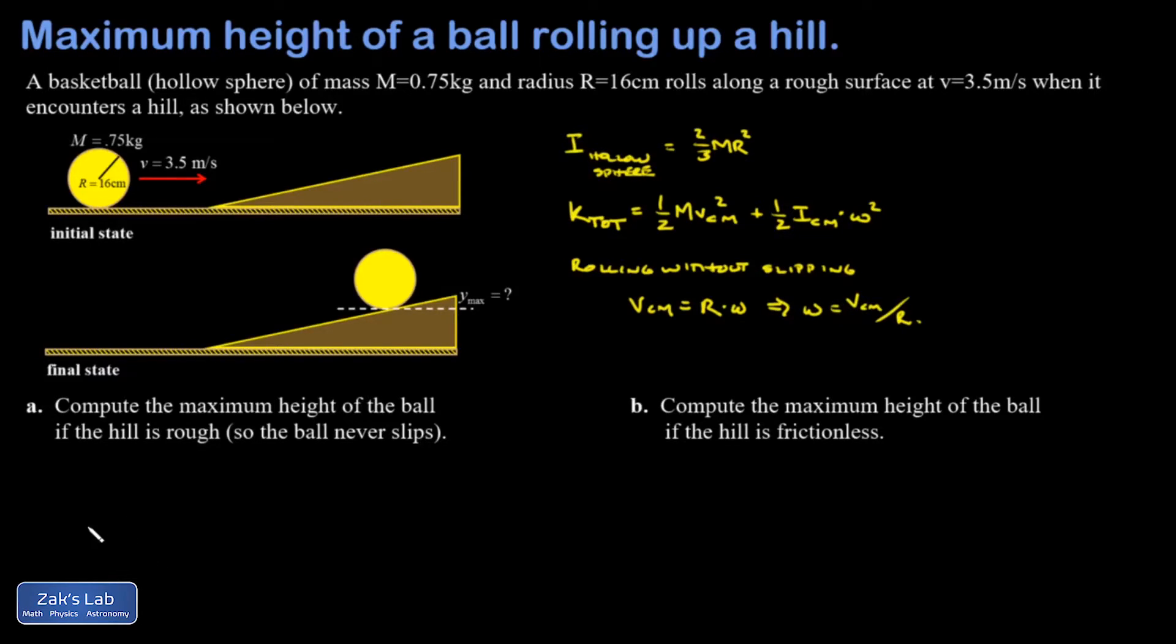Let's get into the problem. I want the maximum height of the ball if the hill is rough, so there can be no slipping between the ball and the hill. What this means is that by the time the ball reaches its highest point, not only is v equals zero so that the ball can no longer be moving translationally, but omega is zero as well.